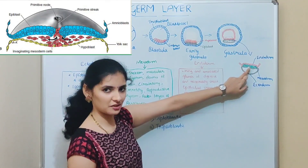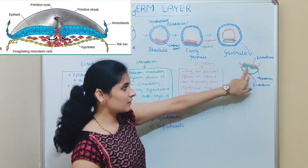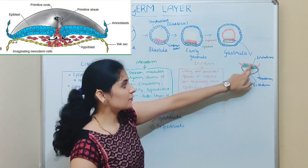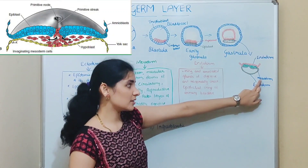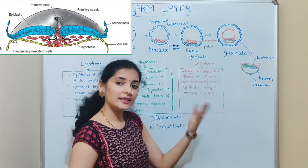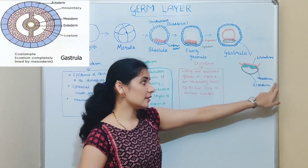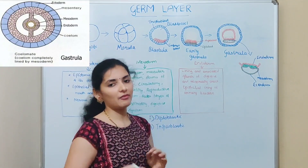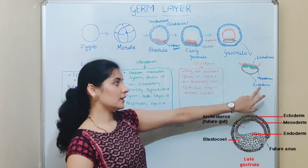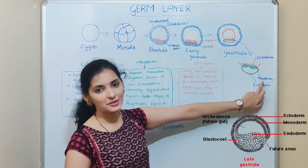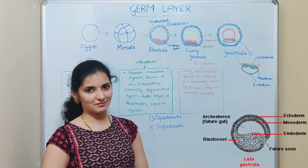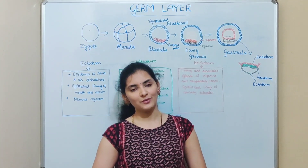The mesoderm is formed between the ectoderm and the endoderm as a result of invagination. As you can see in this diagram, the ectodermal cells invaginate or move inward and produce a layer of cells called the mesoderm, which forms completely between the ectoderm and endoderm. In later stages, this mesoderm layer splits and produces a cavity called the coelom or body cavity. The three germ layers — ectoderm, endoderm, and mesoderm — are formed in the gastrula stage, and the process is called gastrulation.